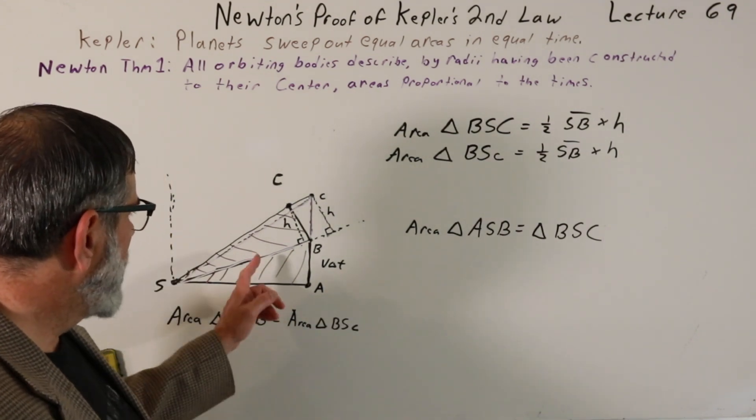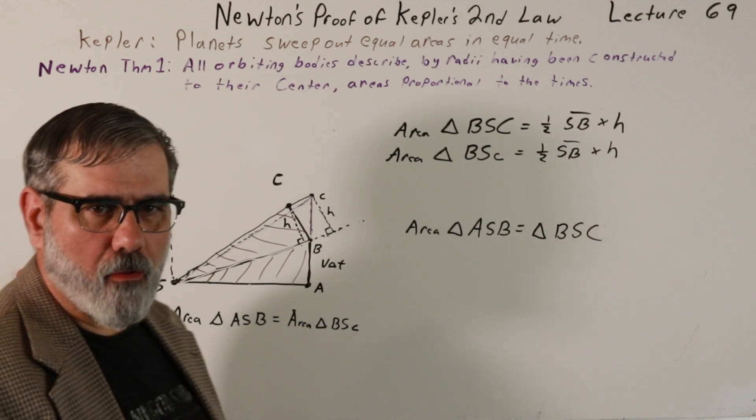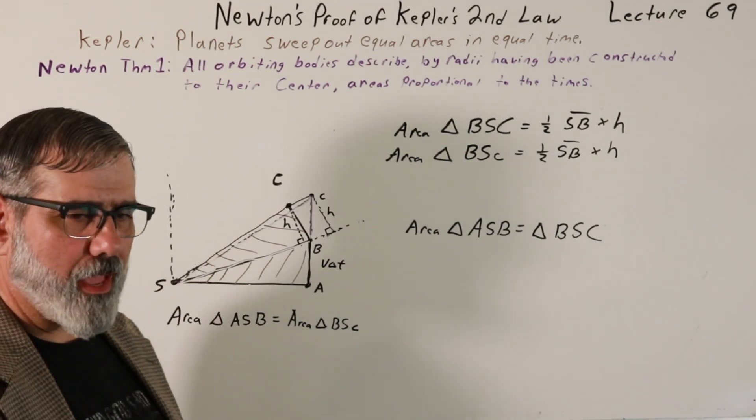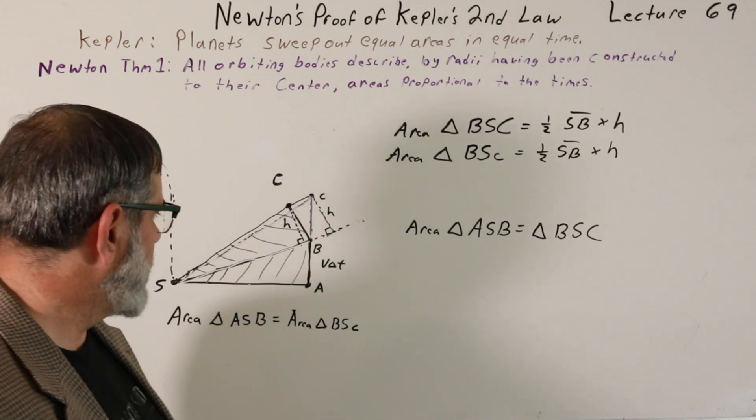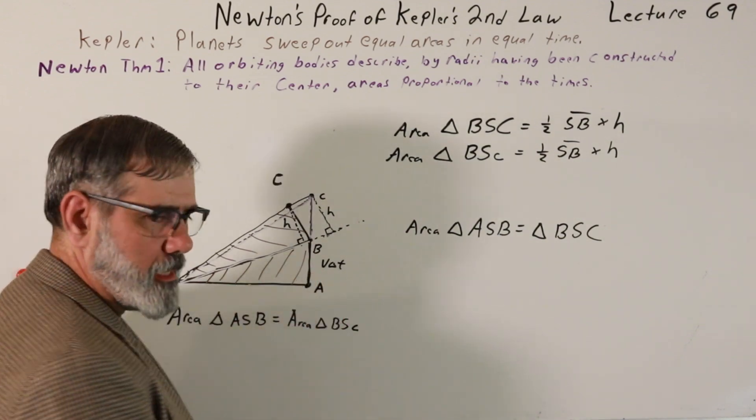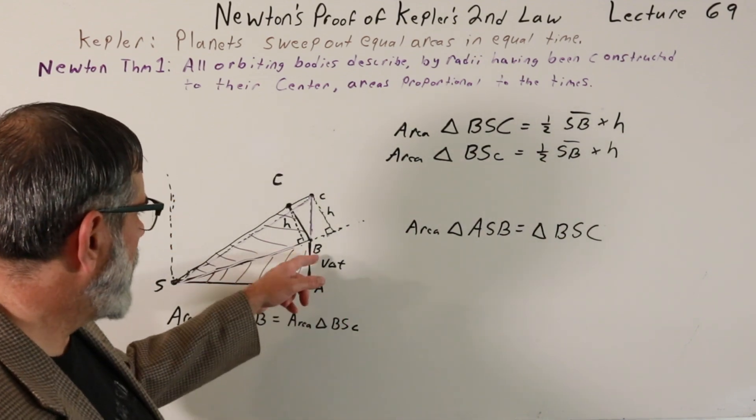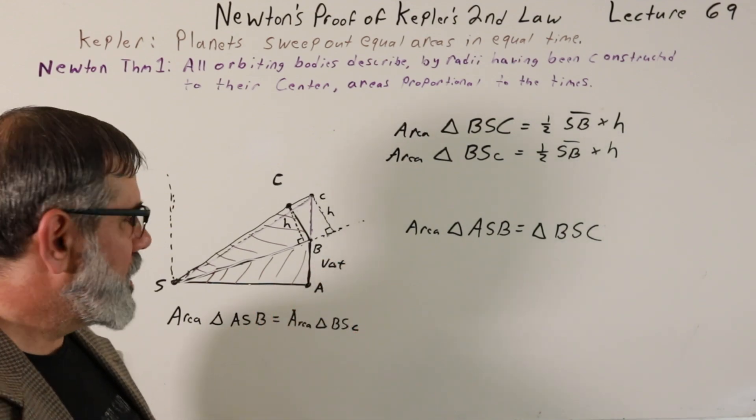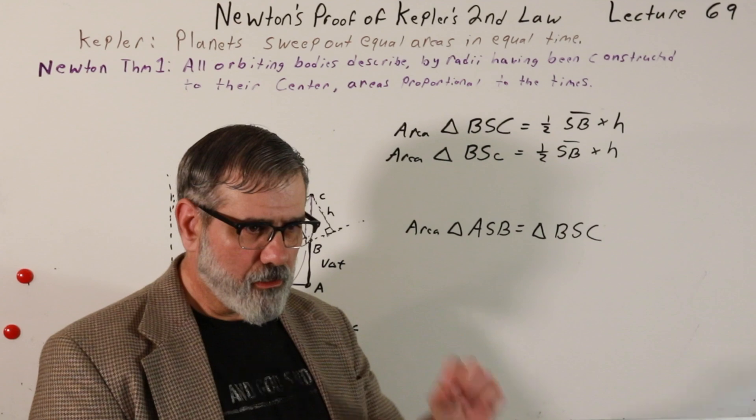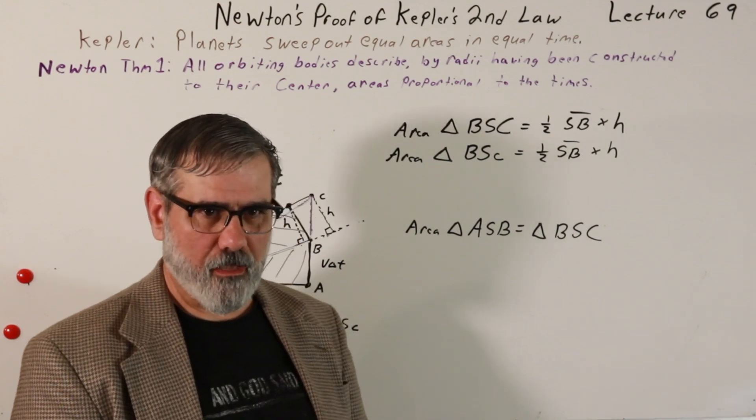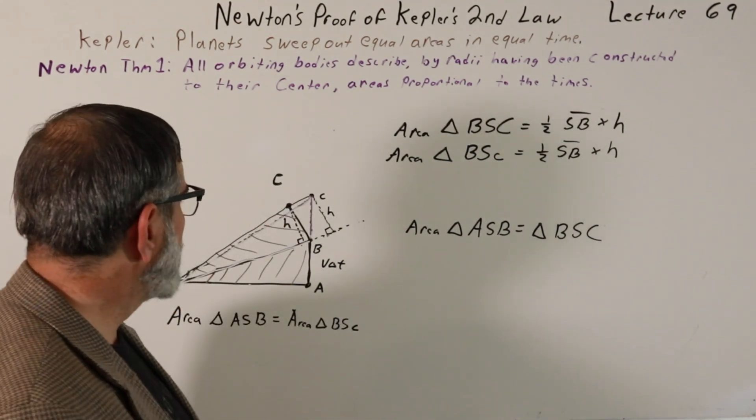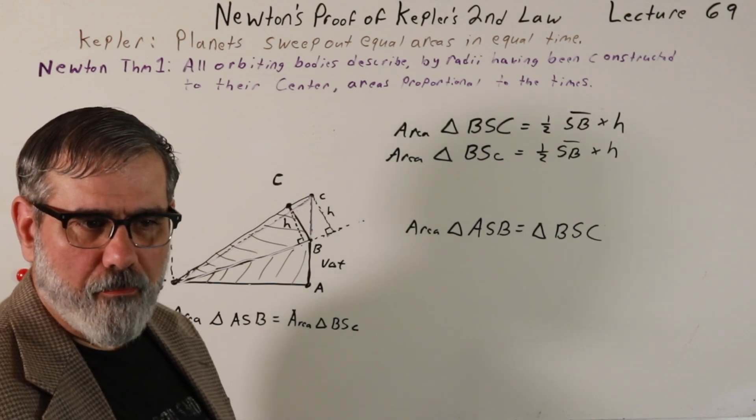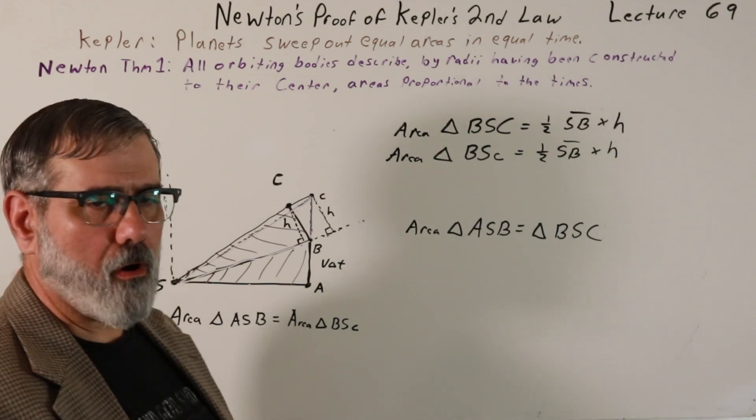And so, since we showed it is true for these triangles, in the limit that these triangles become infinitely small, it will also be true for the areas of the curved paths. The curved paths are a little bit different than the triangles because they're curvy. These are composed of all straight lines. But as you make an infinite number of these triangles, these straight lines approximate little pieces of the curved lines. And so this is how Newton got at equal areas in equal time for Kepler's second law.